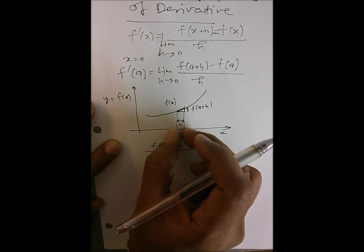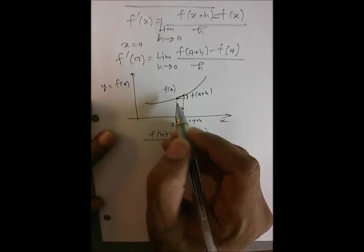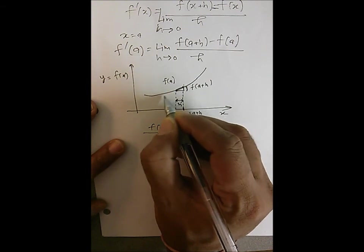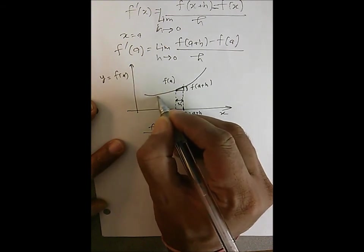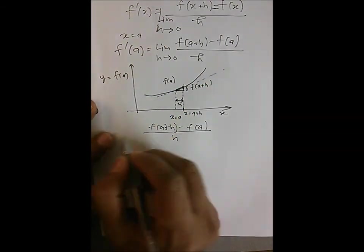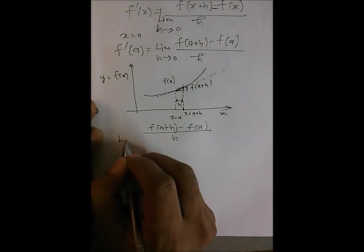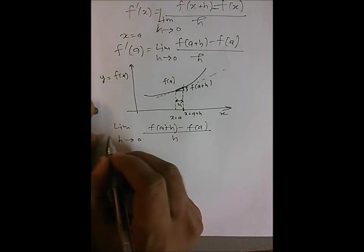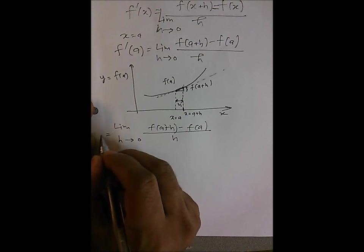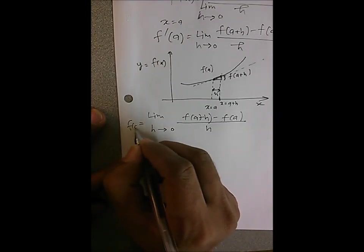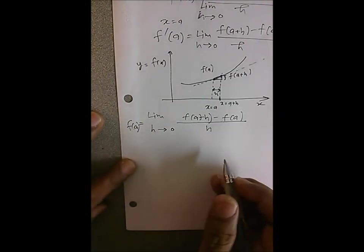And if you try to make h shorter and shorter, then you eventually end up with this line being tangent to the curve. So as h approaches zero, this becomes the derivative of the function at point a.